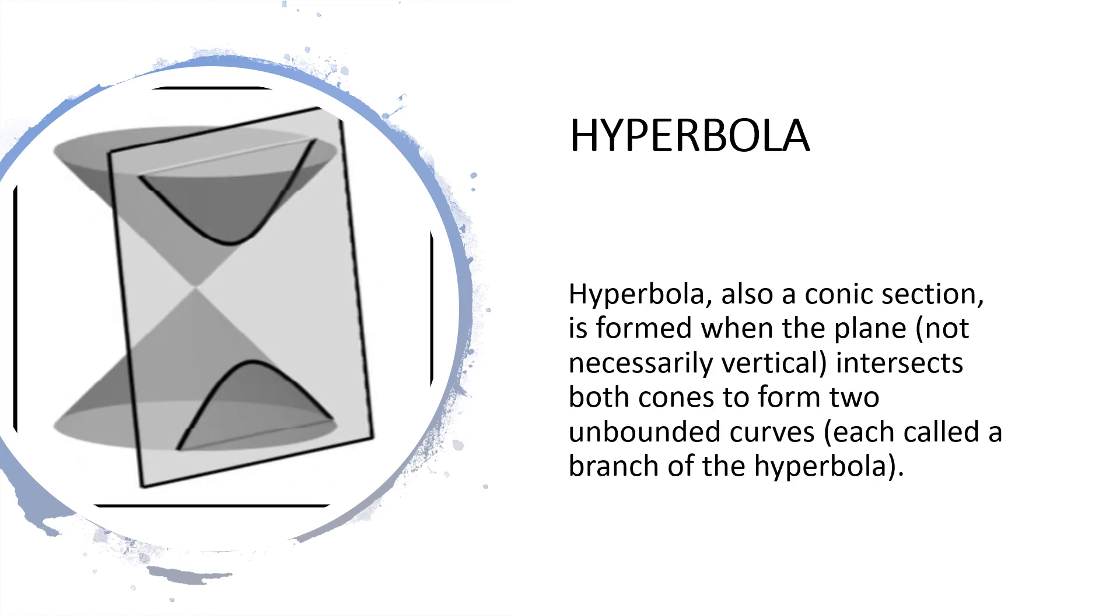Another type of conic section is hyperbola. It is formed when the plane intersects both cones to form two unbounded curves, each called a branch of the hyperbola. An hourglass that contains two hyperbolas, one in each side, is a real-life representation of a hyperbola.